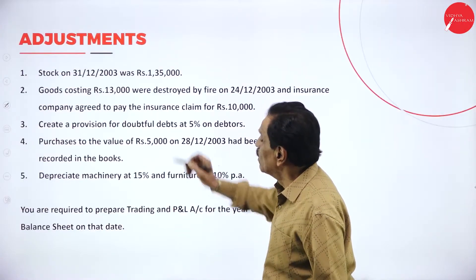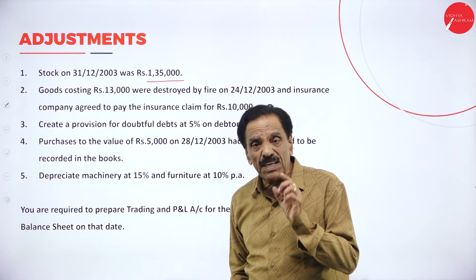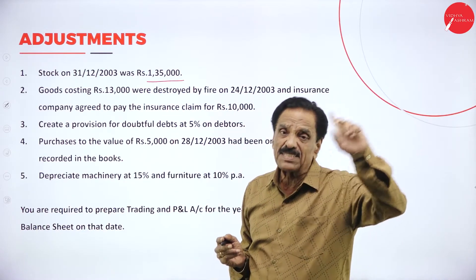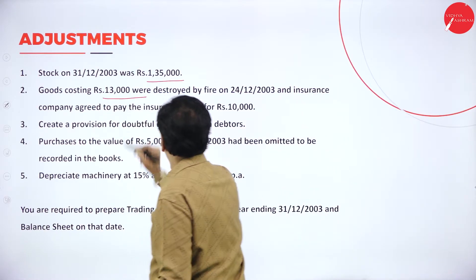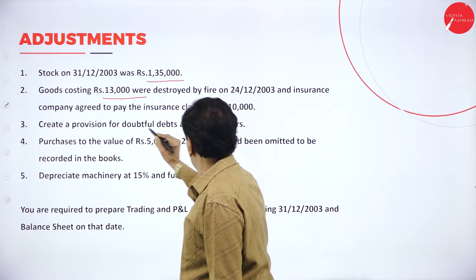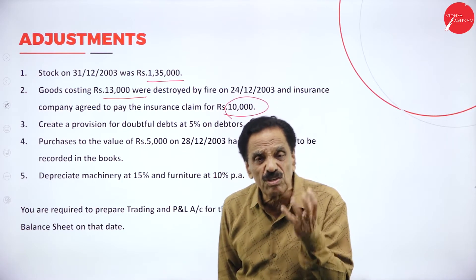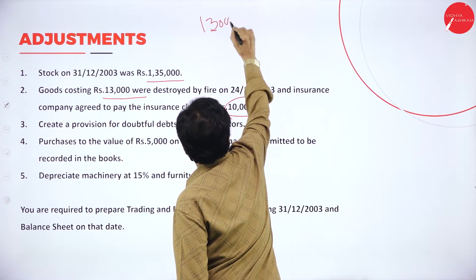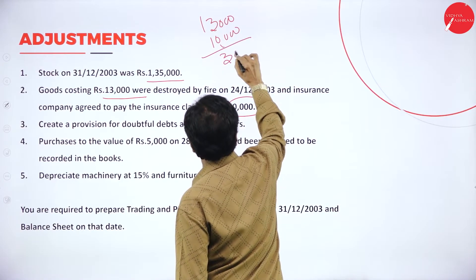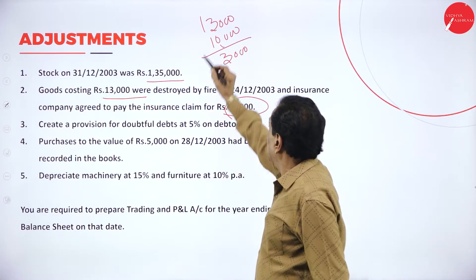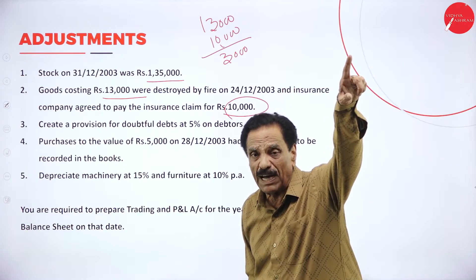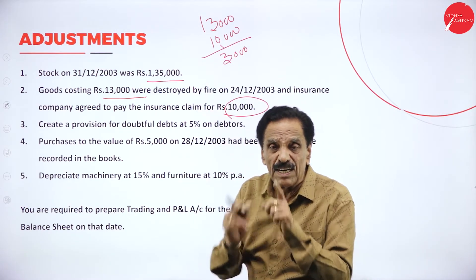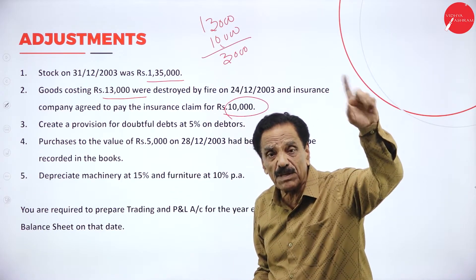The first adjustment is closing stock. Closing stock of 1,35,000: trading account credit side and asset side of the balance sheet. Stock destroyed is 13,000; insurance agreed to pay only 10,000. So stock destroyed value is 13,000 — trading account credit side. Insurance company pays 10,000 — asset side of the balance sheet. The difference of 3,000 is a loss — profit and loss account debit side as loss on stock destroyed.